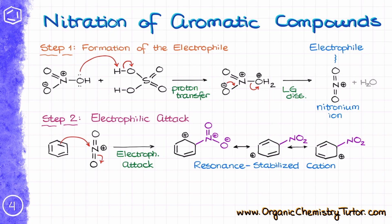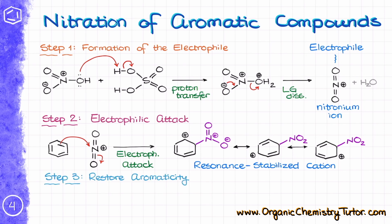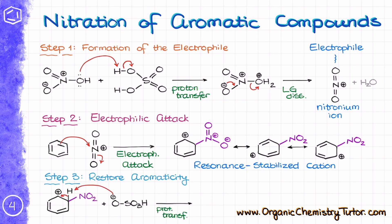I'm not going to show the full Lewis structure of the nitro group here for the sake of space, but I encourage you to draw it in full on the exam, as many instructors will appreciate that you know how the nitro group looks. Students often don't remember the structure of the nitro group — I have no idea why. Once we have our carbocation intermediate, the last step is aromaticity restoration via proton transfer, using the conjugate base of sulfuric acid, which regenerates the H2SO4 catalyst and gives us the final product, nitrobenzene.